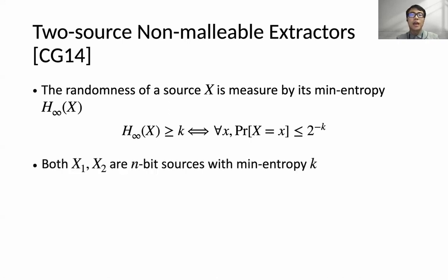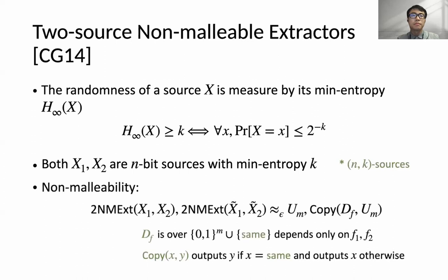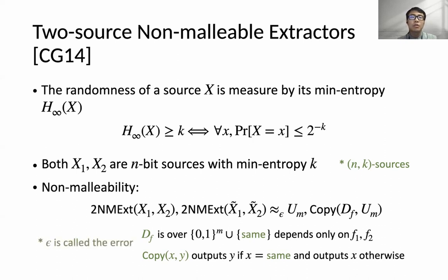We assume X1 and X2 are independent sources with min-entropy k, also called (n,k)-sources. More formally, non-malleability is defined as: the joint distribution of the original output and the tampered output is statistically close to a joint distribution of two n-bit strings, where the first is uniformly random and the second is either the same as or independent of the first. The parameter epsilon here is called the error of the non-malleable extractor.